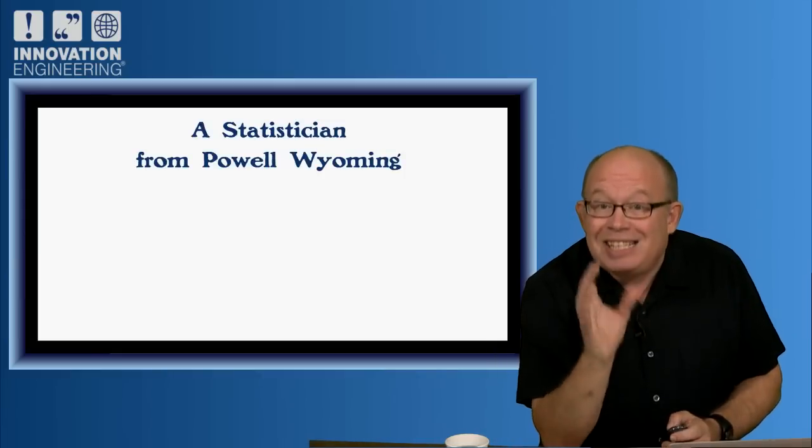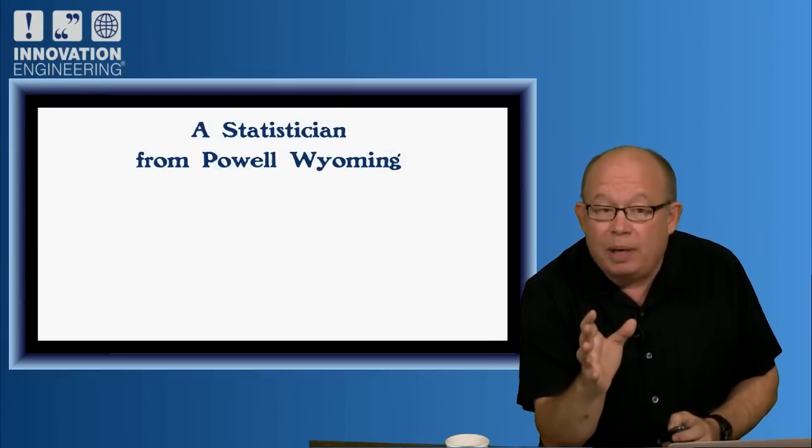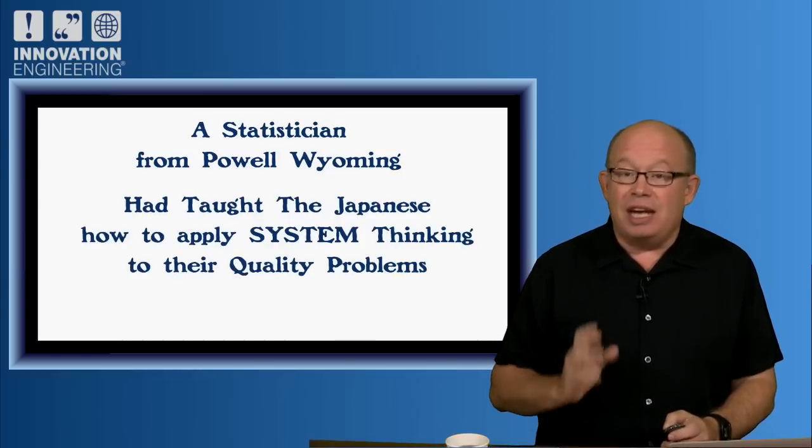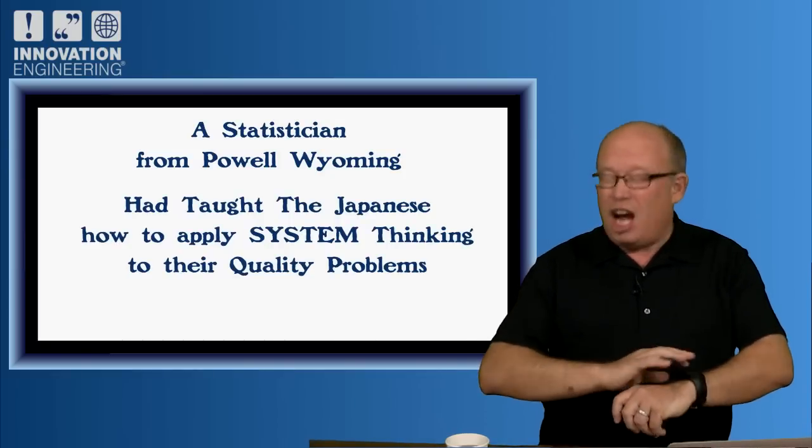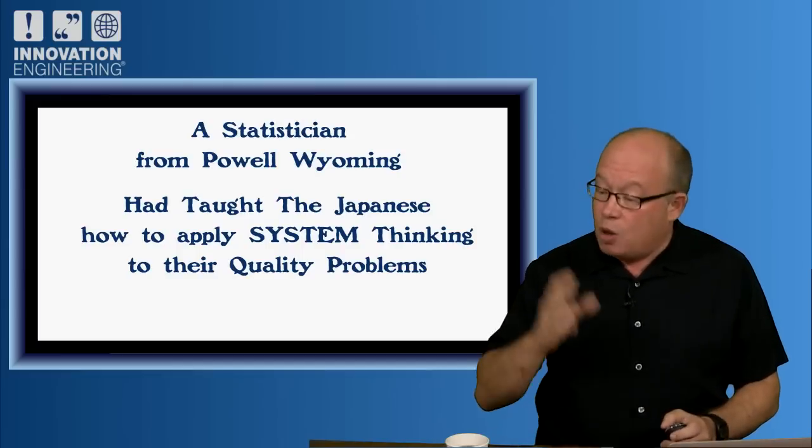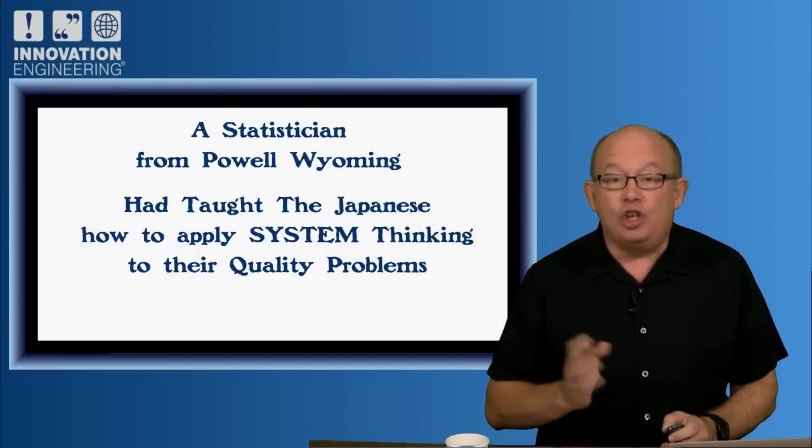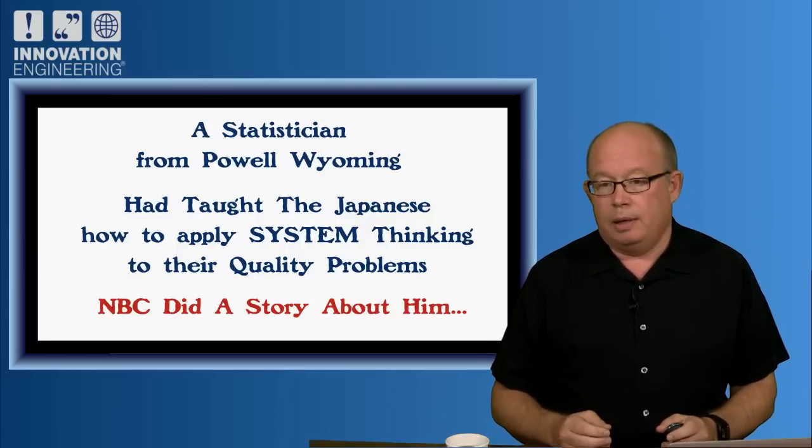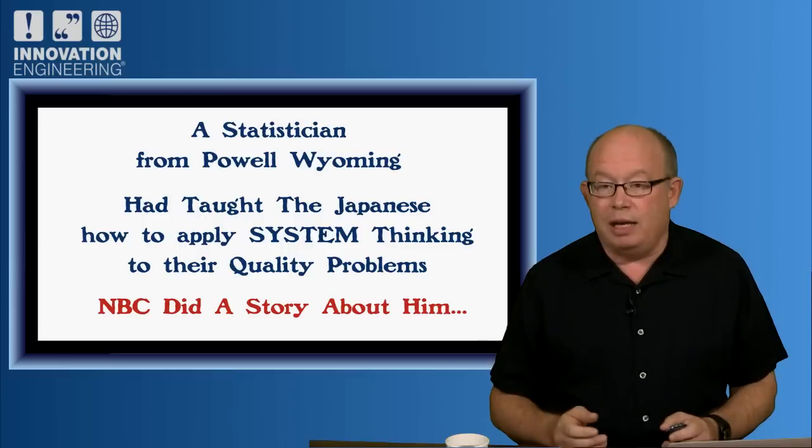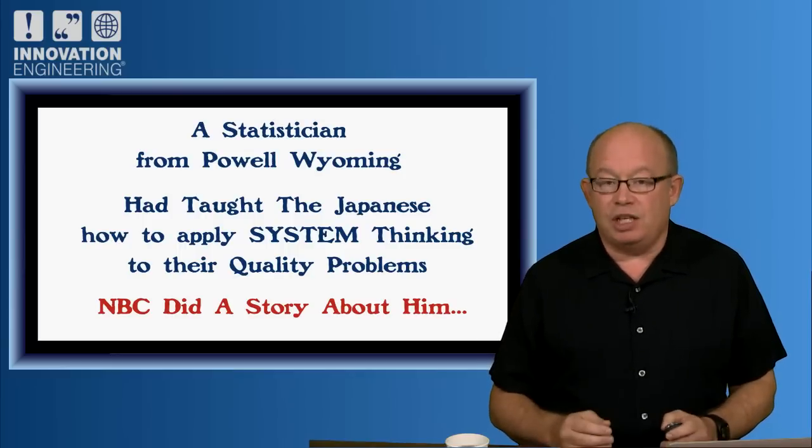And the secret is a statistician from Powell, Wyoming. This statistician had taught the Japanese how to apply system thinking to their quality problems and caused a revolution, going from the worst to the best. In June 1980, NBC does a story about this man called, If Japan Can, Why Can't We? And a transformation happens.